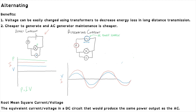The problem comes in when we try to measure that current using either the ammeter or the voltmeter. If the ammeter simply measured the average, we would find that the average current measured across the graph would be zero — the area above the x-axis and the area below the x-axis are equal. The same problem applies to the voltage.